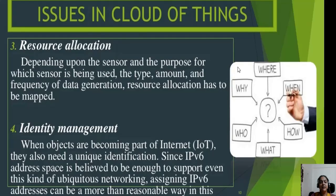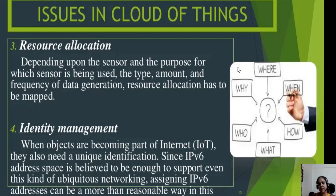Next is identity management. When objects become part of IoT, they also need a unique identification. Just like when you connect a laptop to the internet, your computer gets a unique identification number called an IP address. In the same manner, whenever you make any object part of the Internet of Things, it automatically has to gain a unique identification. For that we have IPv6 and IPv4.